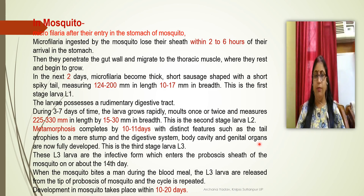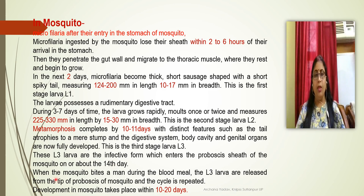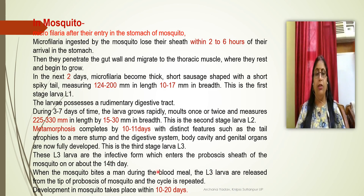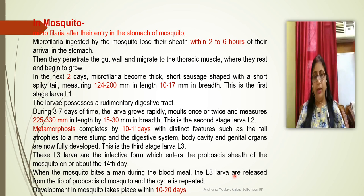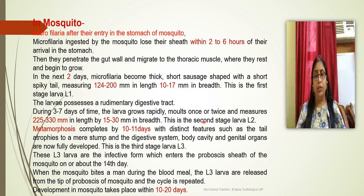The infective third stage larvae enter the proboscis of the mosquito. When the mosquito bites a human for a blood meal, the L3 or infective third stage larvae are released from the tip of the proboscis into the human. The human then becomes infected. These L3 larvae mature into adult worms inside the human body. Development of larvae inside the mosquito takes approximately 10 to 20 days.